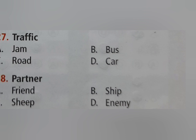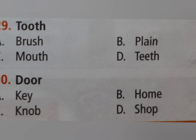Eighth: partner — option A friend, option B ship, option C sheep, option D enemy. The right answer is option B ship — partnership. Ninth: tooth — option A brush, option B plane, option C mouth, option D teeth.